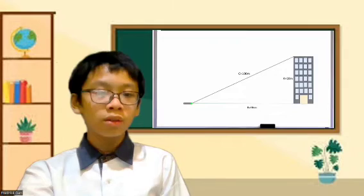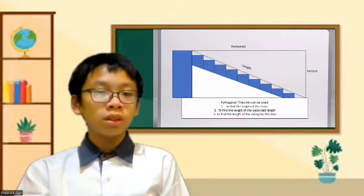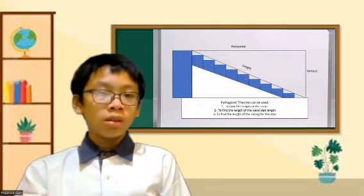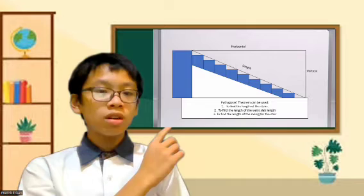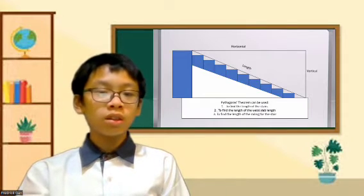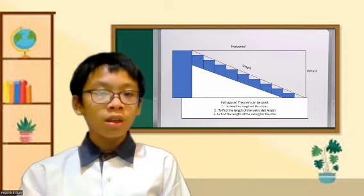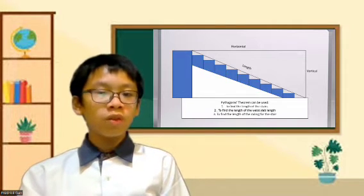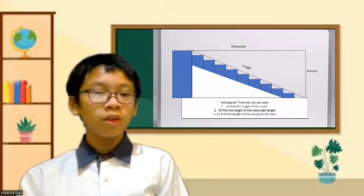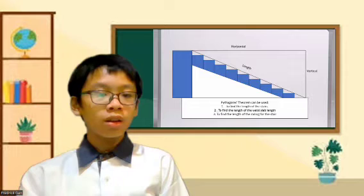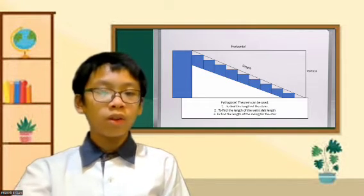This is a second example. This shows stairs which shows the horizontal (which is b), the vertical (a), and the length as the hypotenuse. It can be used to find the length of the stairs, to find the length of the waist slab, and to find the length of the railing for the stairs.